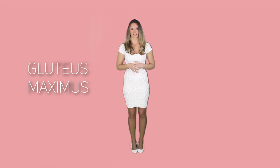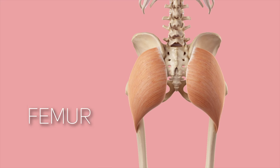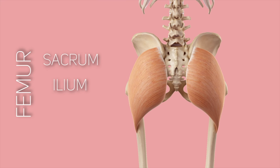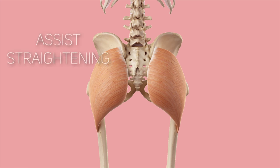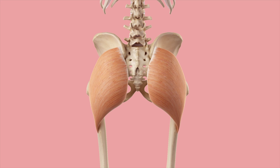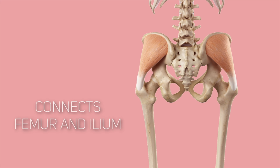The posterior group contains the following muscles. First is the gluteus maximus, which is considered to be the largest muscle in the human body. It links the femur with the sacrum, ilium, and coccyx. It extends the thigh and assists in lower limb straightening during movements. Gluteus medius is the second posterior muscle and is partly inferior to the gluteus maximus, connecting the femur and the ilium.